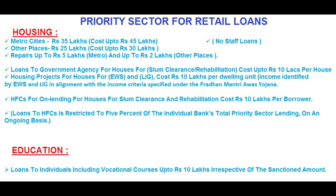Housing projects for EWS and LIG with cost up to rupees 10 lakhs per dwelling unit qualify, with income defined in alignment with the criteria under Pradhan Mantri Awas Yojana. For housing finance companies, all lending for slum clearance and rehabilitation cost up to rupees 10 lakhs per borrower is included. Loans to housing finance companies are restricted to 5% of the individual bank's total priority sector lending on an ongoing basis. For education loans, loans to individuals including vocational courses up to rupees 10 lakhs come under priority sector.